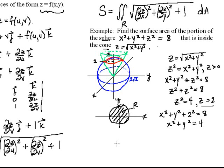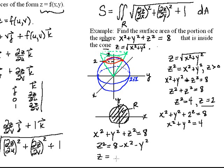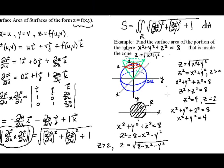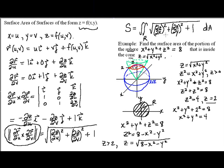Whenever possible, it's nice to write the function as z = f(x,y) by solving for z. Here, x²+y²+z²=8 gives z²=8−x²−y², so z = ±√(8−x²−y²). Since we're only talking about z greater than 2, we take the positive square root: z = √(8−x²−y²). That's useful because we can directly apply our new surface area formula.